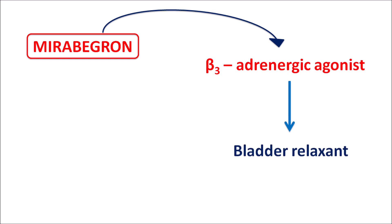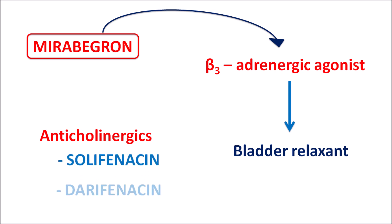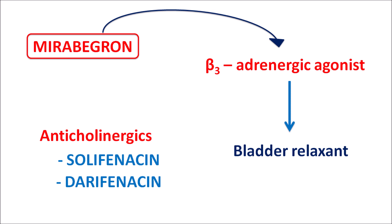We have another group of drugs which also act as bladder relaxants — the anti-cholinergic agents. For instance, drugs such as solifenacin, darifenacin, tolterodine, and oxybutynin. There are many types of anti-cholinergic drugs which act as bladder relaxants.